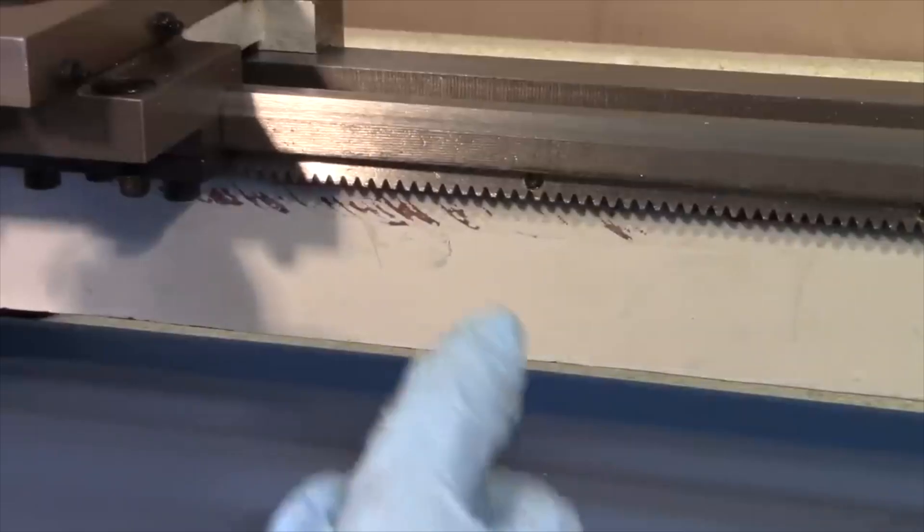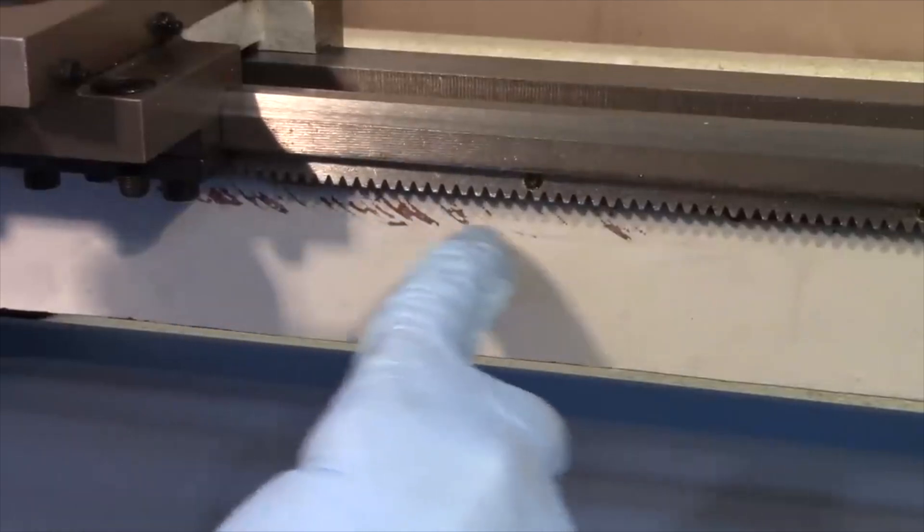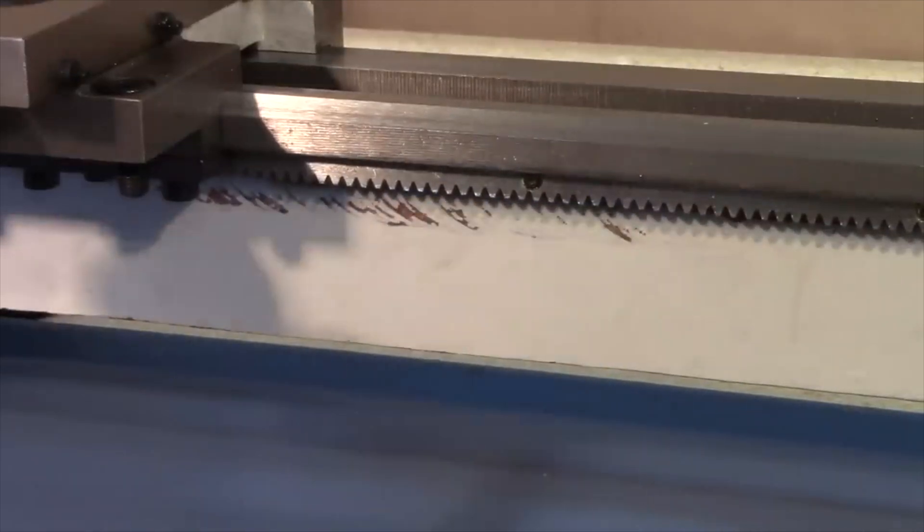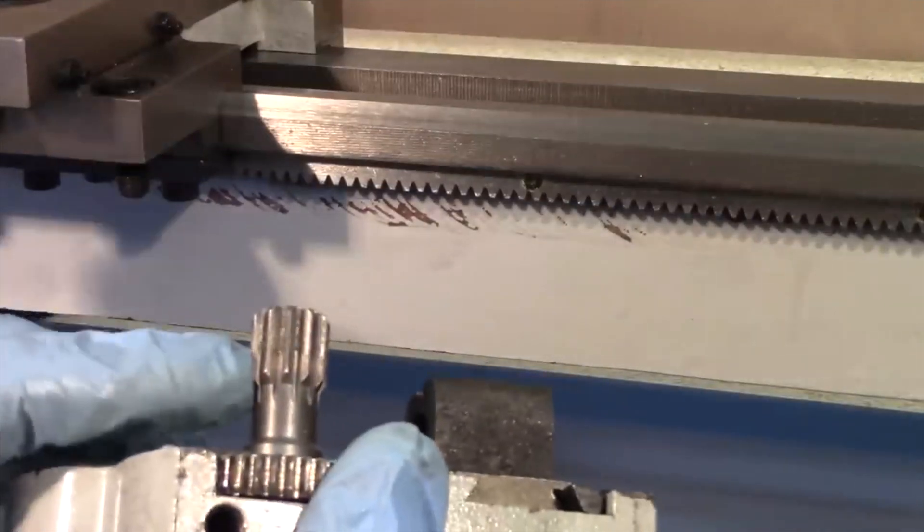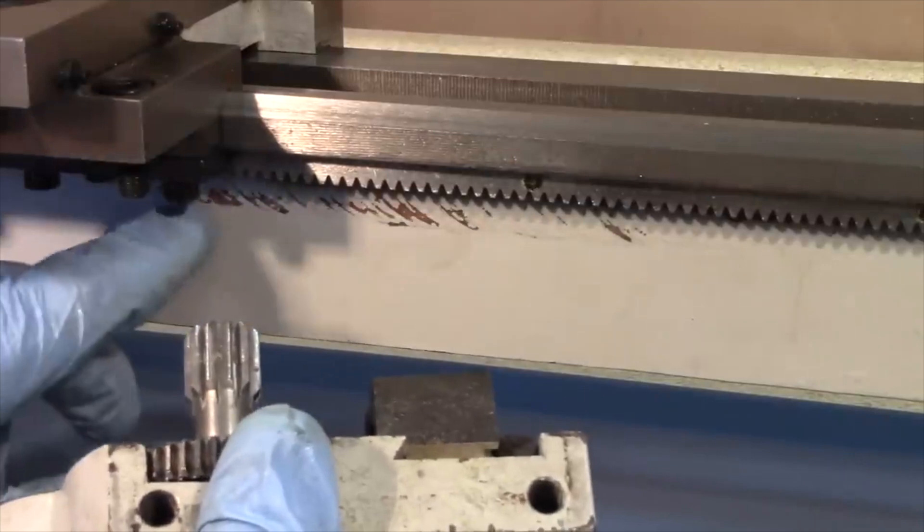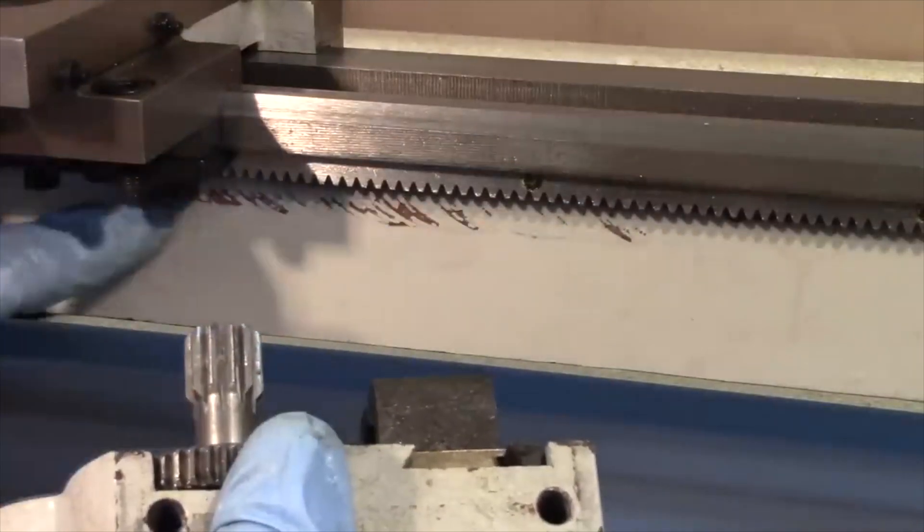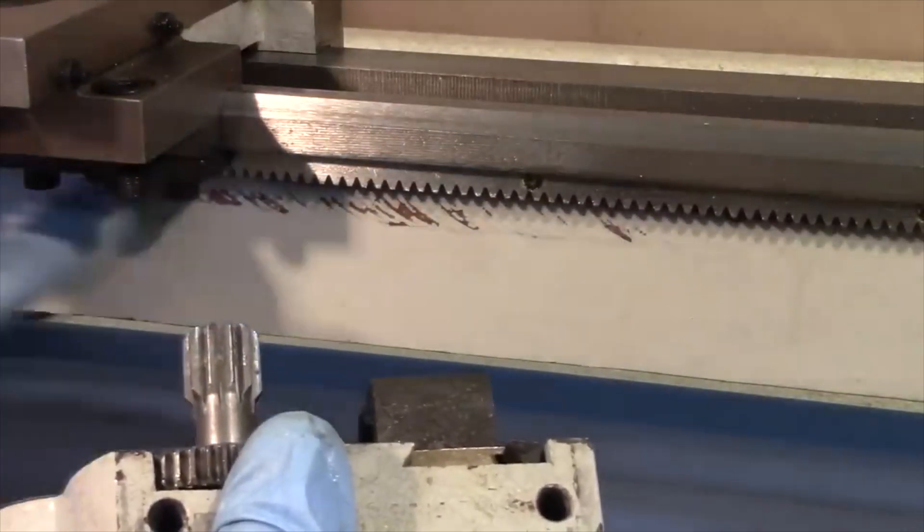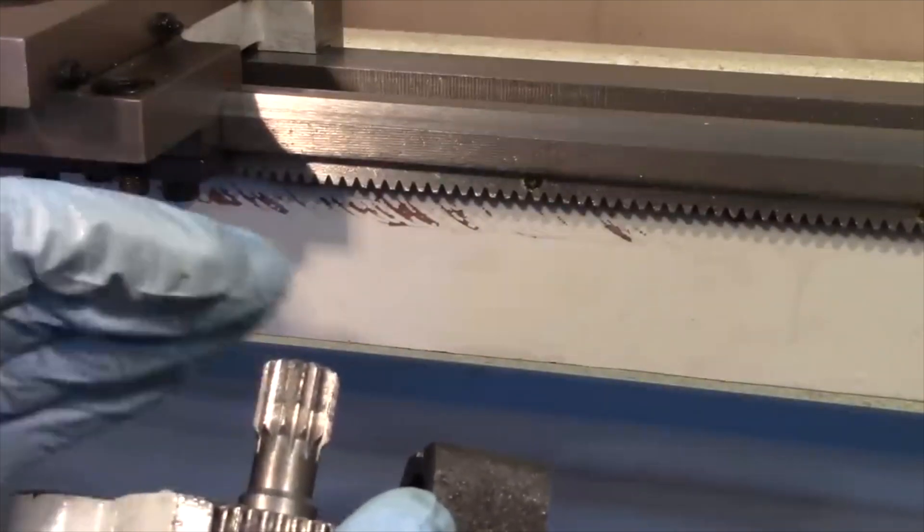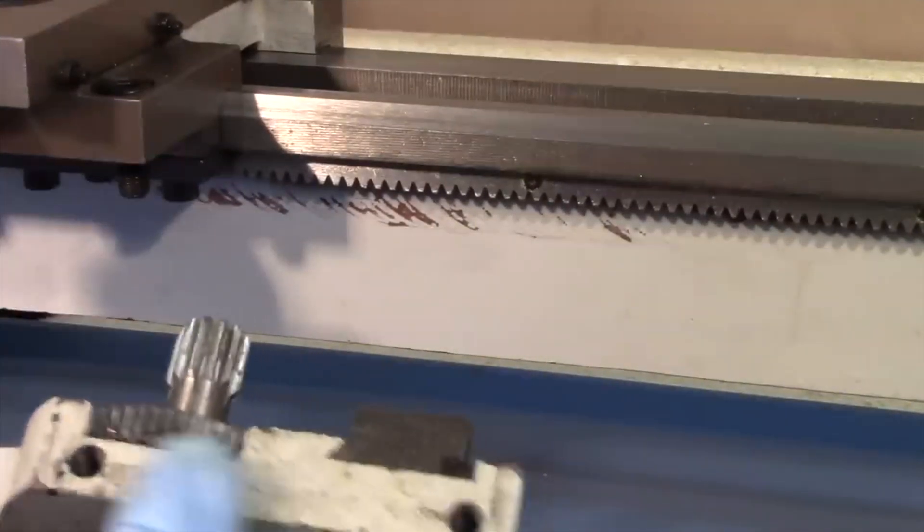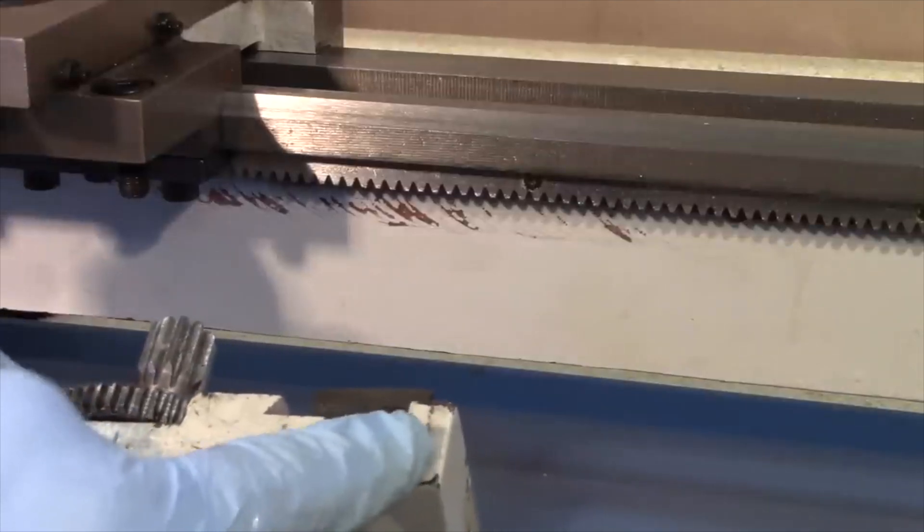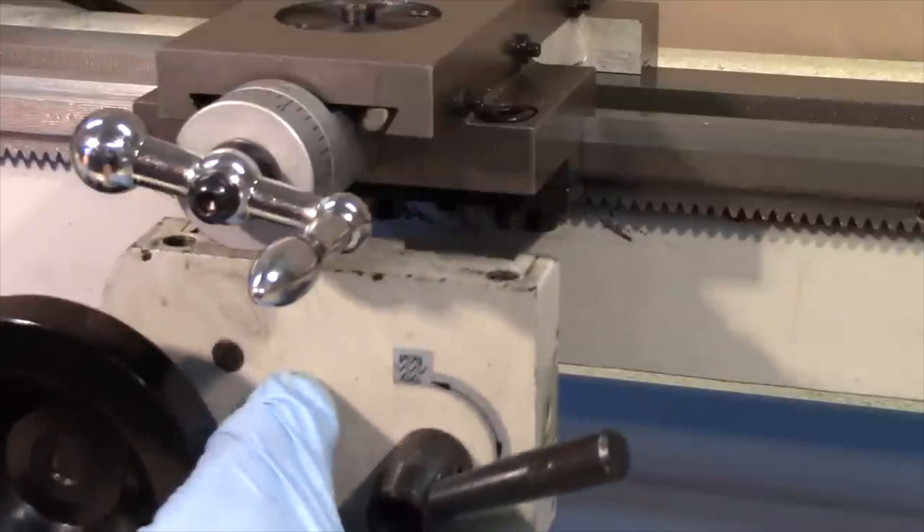Now as I was getting ready to reassemble the lathe, I happened to notice these scrape marks here along the bed of the lathe. And it occurred to me that what's happening here, this pinion gear that engages with this rack, is evidently scraping along the surface of the bed, which it should not be doing. So this gear appears to be too far inward.